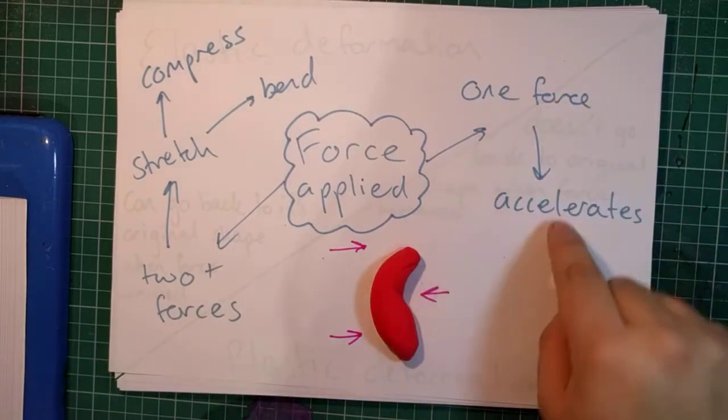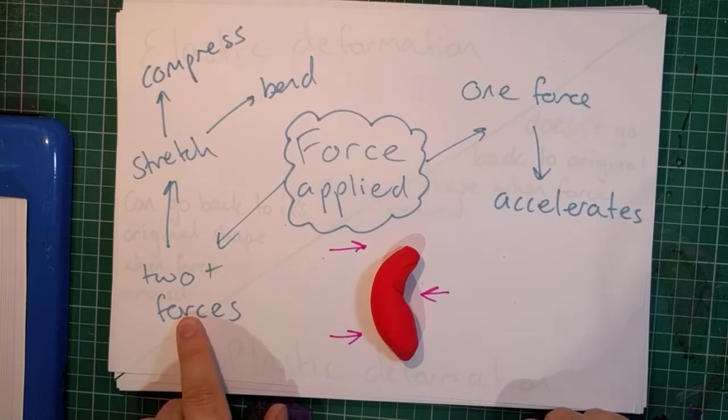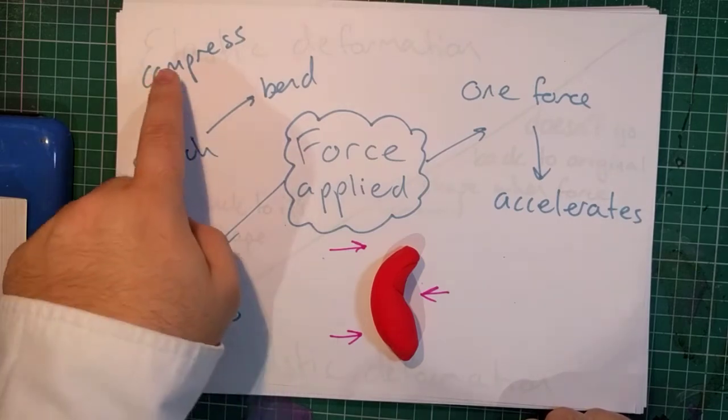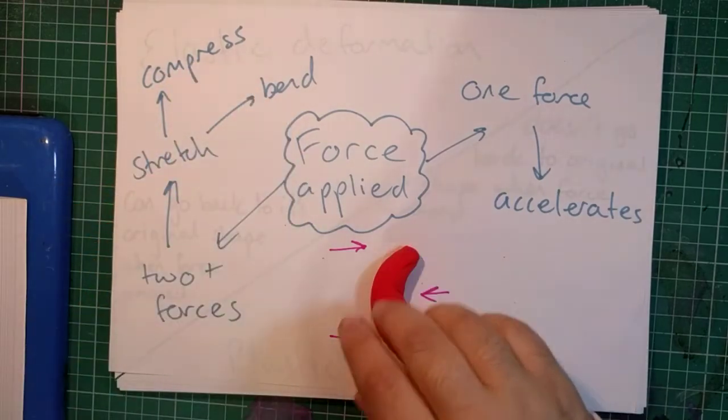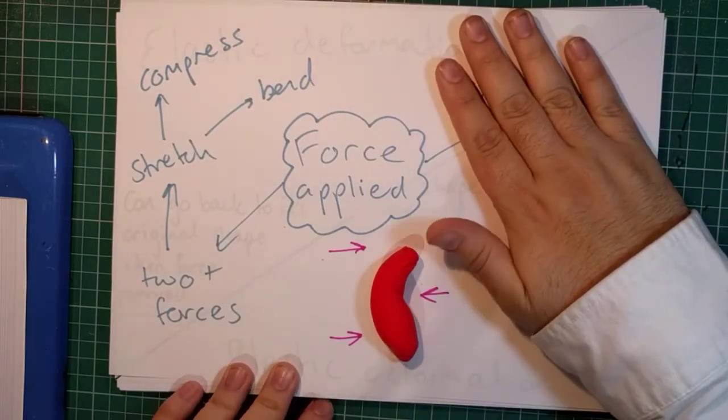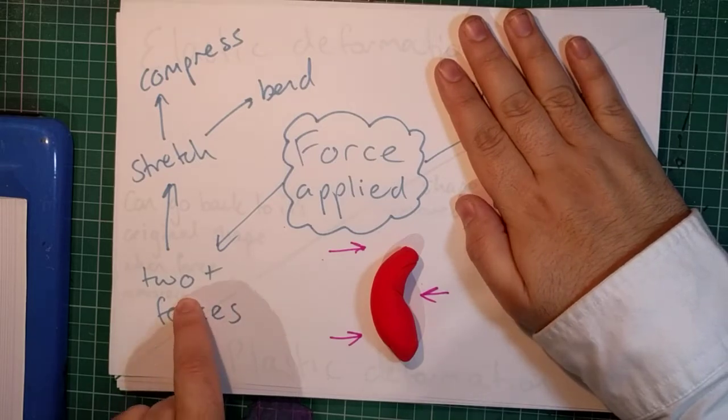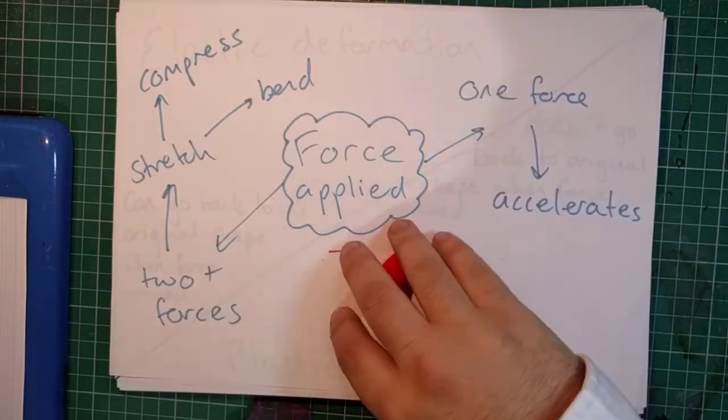So one force accelerates, gets faster in a particular direction. Two or more forces and it's either going to stretch, compress, or bend. Now in a later topic we're going to talk a lot more about acceleration, so what we're really interested in right now is when we have two or more forces and we stretch, compress, or bend the object.